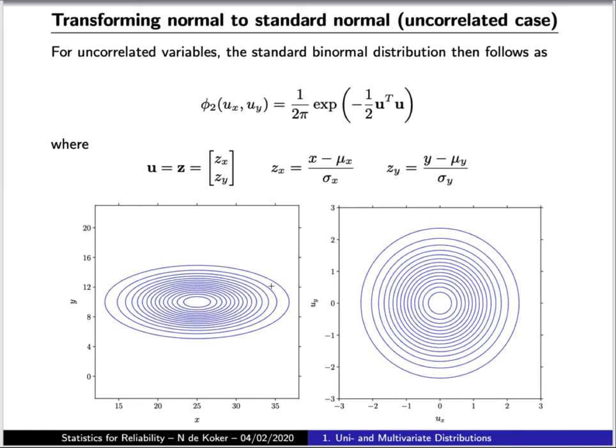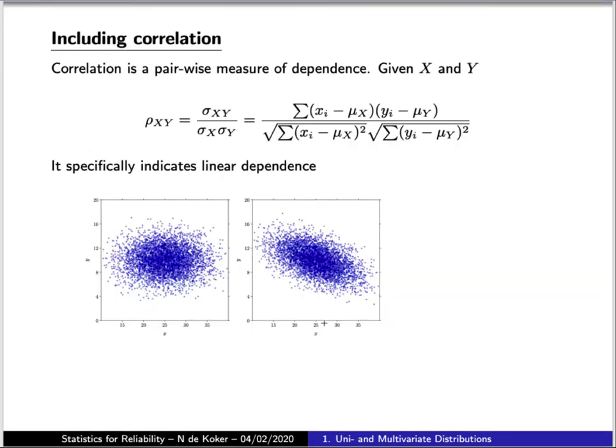Now let's consider correlation. So correlation is a pairwise measure of the dependence between two variables which is basically defined as the normalized covariance of the two variables.